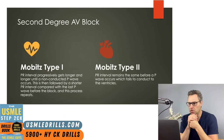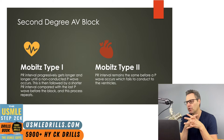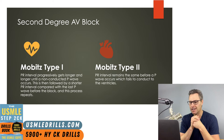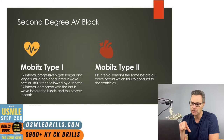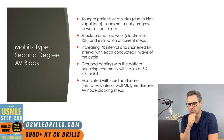Now let's talk about second degree AV blocks — Mobitz Type 1 and Mobitz Type 2. In Mobitz Type 1, the PR interval progressively gets longer and longer until a non-conducted P wave occurs, followed by a shorter PR interval, and this process repeats. In Mobitz Type 2, the PR interval remains the same before a P wave simply fails to conduct to the ventricles.